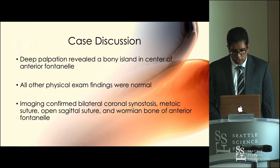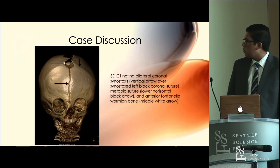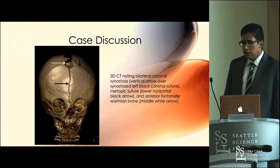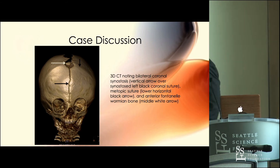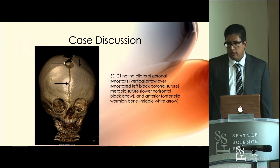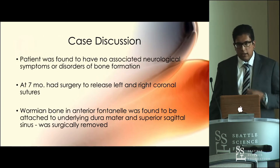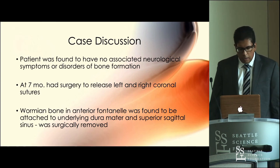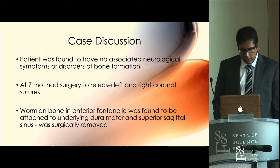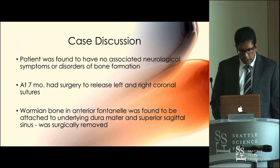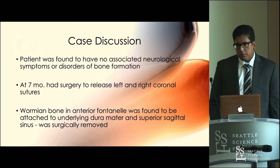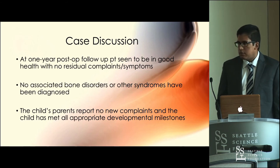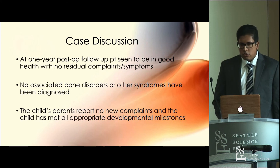The suspicion was confirmed with imaging. What we see here is a 3D CT reconstruction of the patient. The white arrow at the top shows the wormian bone right in the middle of the coronal suture, and the bone within the anterior fontanelle was removed at that time. During surgery, it was seen that the bone was significantly attached to the underlying dura as well as the superior sagittal sinus, which was something to be aware of during the procedure. At one-year follow-up post-op, the patient has no neurological problems, is meeting all developmental milestones, and the parents have no concerns — the surgery was a success.